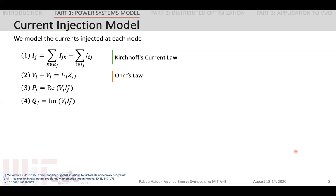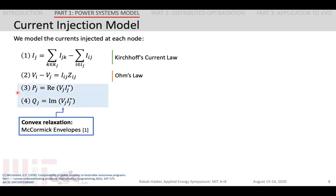In order to meet these design goals, we introduce the current injection-based model. We look towards the rectangular representation of complex numbers to achieve simplicity and tractability. Constraint 1 models Kirchhoff's current law, constraint 2 is Ohm's law, and constraints 3 and 4 are the definitions of real and reactive power based on the voltage and current injection at that node. These constraints, however, are non-convex bilinear constraints, which we can convexify using McCormick envelopes.